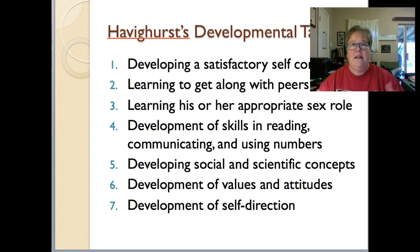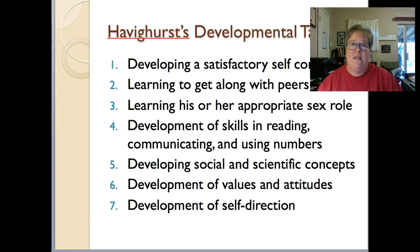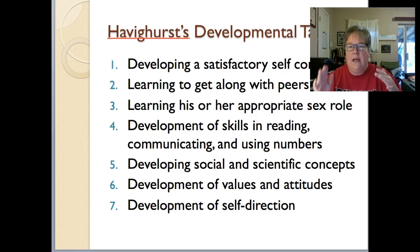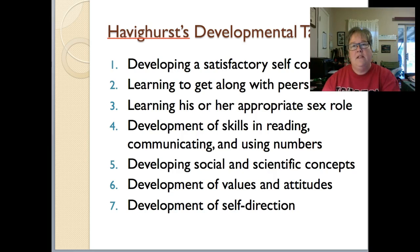The sixth task is about kids internalizing the values and attitudes from home — they are emulating what they see at home. The seventh task is development of self-direction. We want kids to be responsible for their own learning. This starts in early grades when teachers create job charts or guided reading group responsibility lists — giving kids some self-direction.